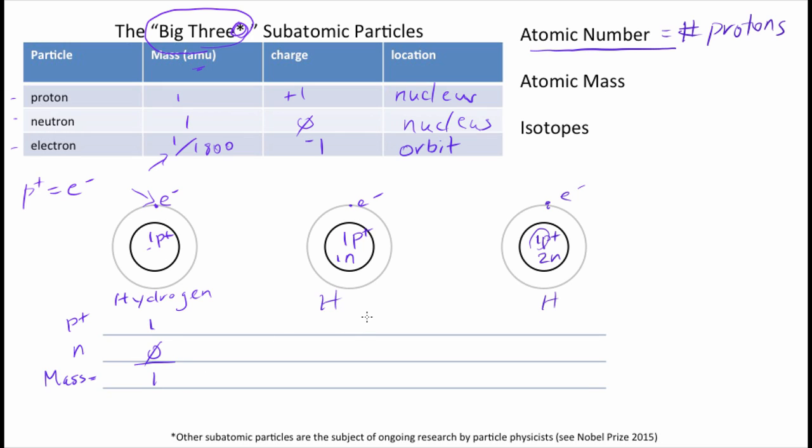Over here I have another atom of hydrogen. It has one proton, but it also has a neutron this time. Okay, so one proton plus one neutron gives me a mass of two. And over here, yet another atom of hydrogen. This one has one proton because it's hydrogen. It happens to have two neutrons, so its mass is three.